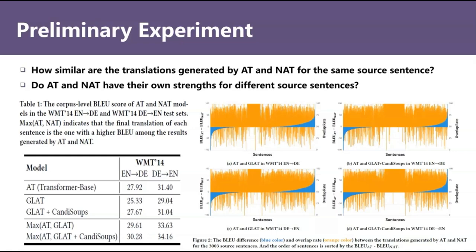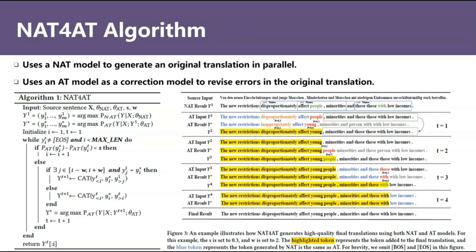Briefly, NAT for AT first uses a NAT mode to generate an initial translation in parallel, and then uses an AT mode as a correction mode to revise errors in the initial translation. The specific algorithm is as follows. The left shows the overall algorithm flow, and the figure on the right shows an example of how NAT for AT works.